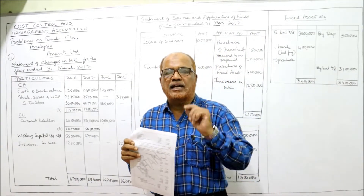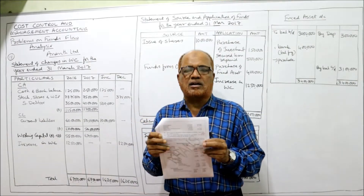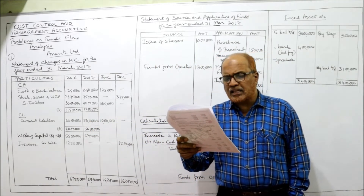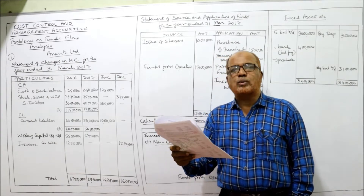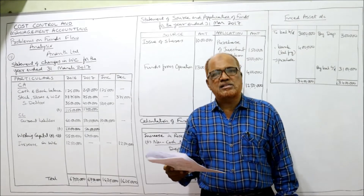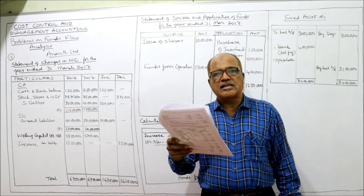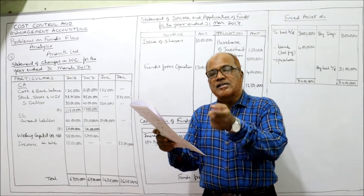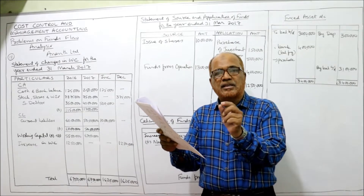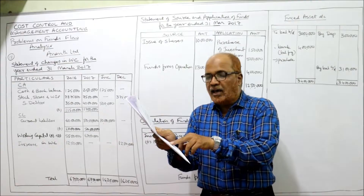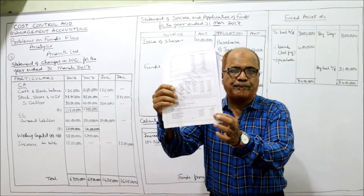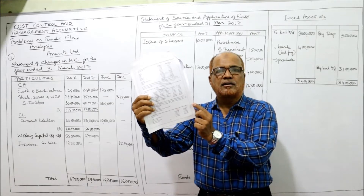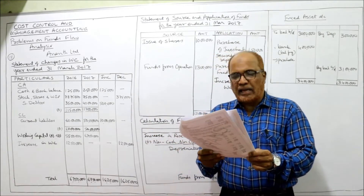Before starting the 11th problem, I expect my viewers to have a printout of the problems given in the link under my description. Always keep the problems ready, then we'll start the solutions. See the 11th problem carefully: prepare a funds flow statement for Anant Limited from the following information for the year ended 31st March 2017. Data is given for 2016 and 2017, but there is a printing mistake. The first column should be 2017 and the second column should be 2016.